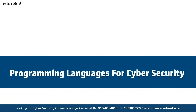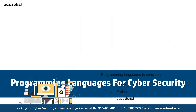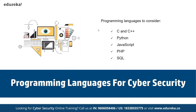When it comes to programming languages for cybersecurity, the most widely used are C and C++. These are required to understand how operating systems work — their limitations, where to use them, how to bypass default security parameters — which is an integral part of working around system security. Then we have Python, one of the core programming languages, which is also the most widely used language in the data science domain.